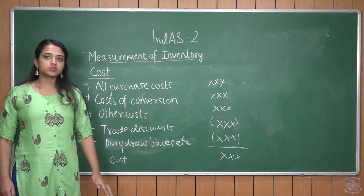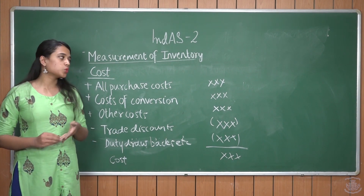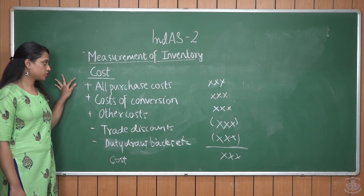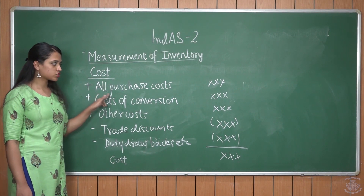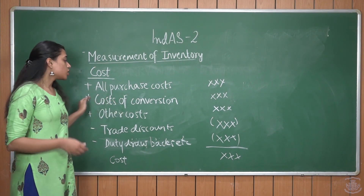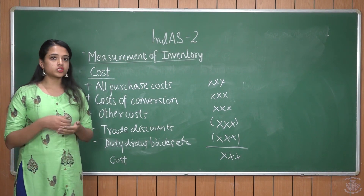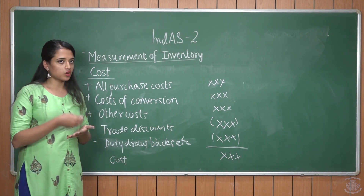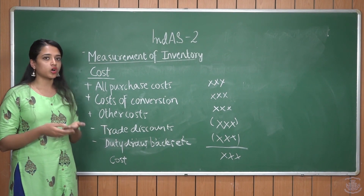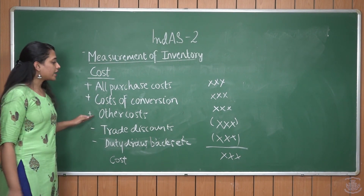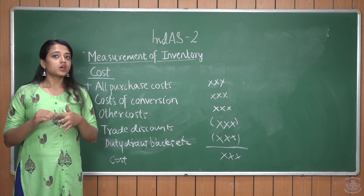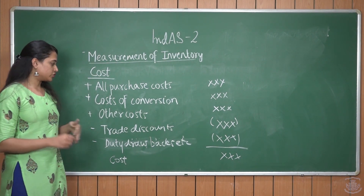Measurement of inventory: inventory is measured at cost or NRV, whichever is lower. The components of cost include all purchase costs, which are raw material costs; cost of conversion — costs incurred for converting raw material into finished goods, for example machine operating costs and labour; and other costs directly involved in getting the inventory to its current location and condition.